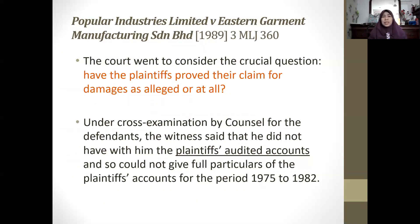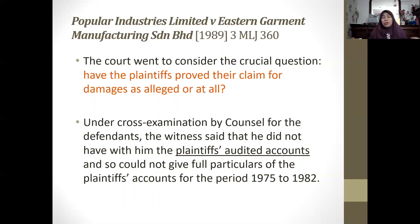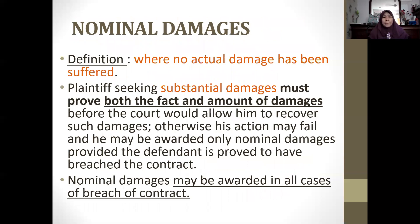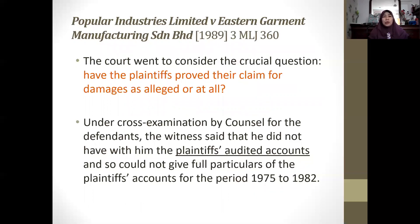Returning to the Popular Industries case on the question of proof: the court considered whether the plaintiff had proved their claim for damages. Under cross-examination, the witness did not have the plaintiff's audited accounts. It was a mere allegation that goods were resold at a 32% markup. The witness could not give full particulars of the plaintiff's accounts for the alleged duration of 1975 to 1982. As a result, they could not recover the amount claimed — there was not enough evidence, as the court cannot simply award whatever is alleged without documentary evidence such as audited accounts.